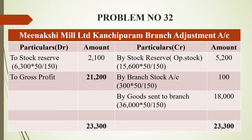Now we prepare the branch adjustment account. The closing stock we found is Rs. 6,300, which gives Rs. 2,100 on the debit side. For the opening stock of Rs. 15,600, we get Rs. 5,200. Next, in the branch stock account for surplus — surplus stock is on the debit side — so we work on the credit side.